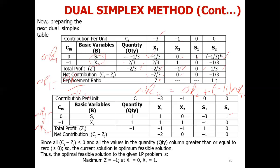Using these operations, we complete the new tableau. Looking at the solution, no quantity is negative, so the solution is feasible. We recalculate ZJ as quantity multiplied by the coefficient of the basic variable, and similarly for all columns. CJ minus ZJ gives: minus 2, 0, minus 1, 0.